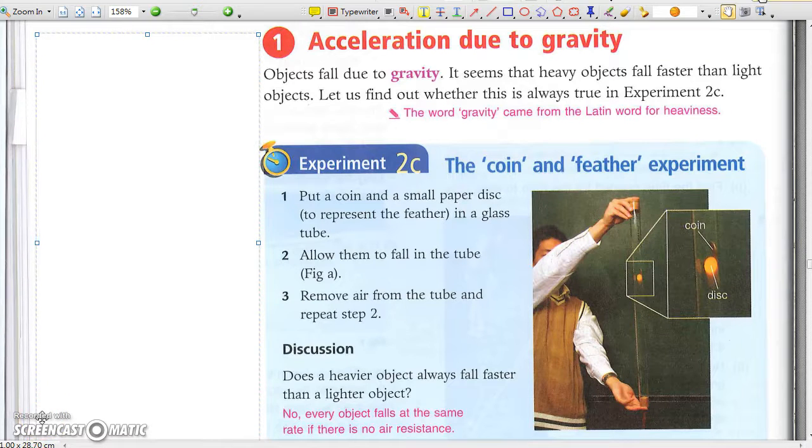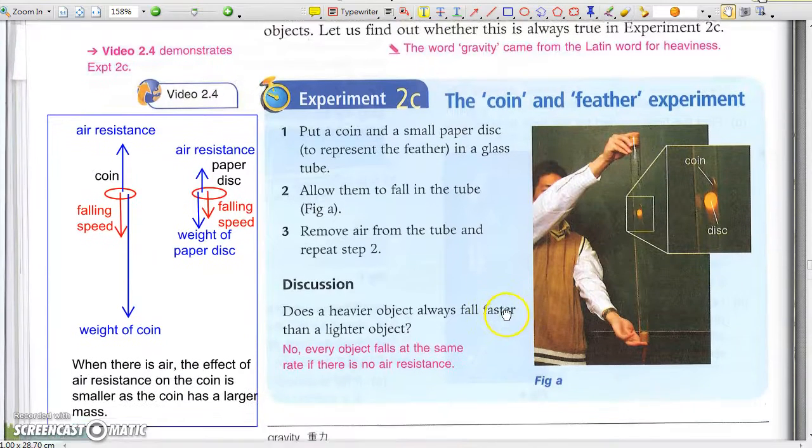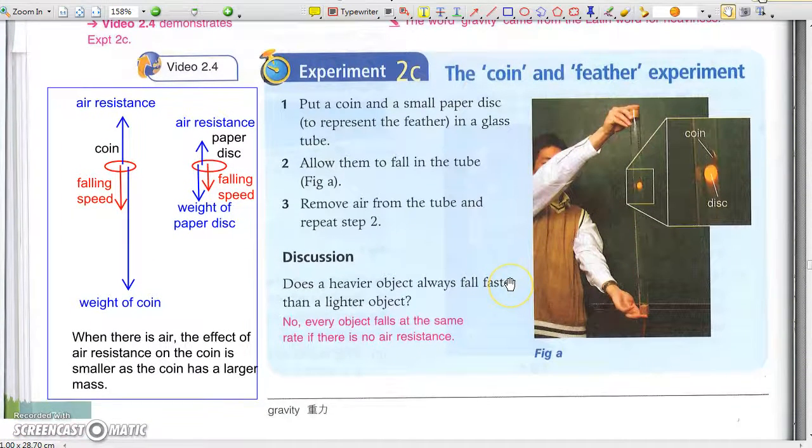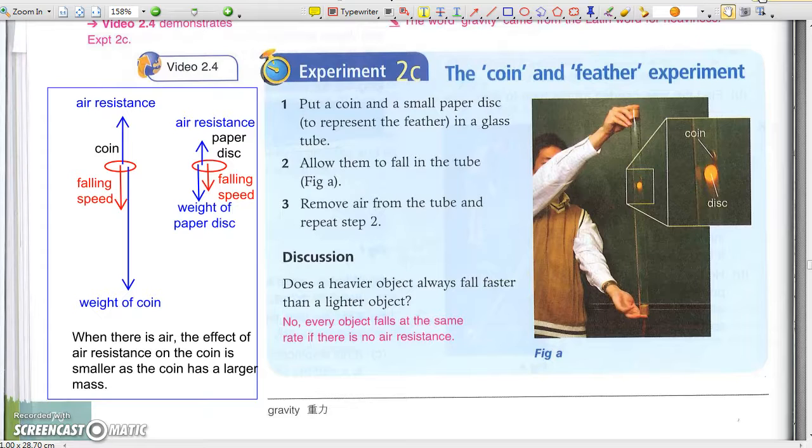In daily life, a larger mass falls faster because the effect of air resistance is less. Note that when a metal coin falls at a higher speed, the air resistance acting on it is larger than the air resistance acting on the paper disc.